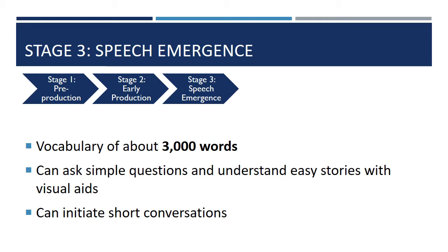Stage three is called speech emergence. Students in this stage have about 3,000 words in their active and receptive vocabulary. This is a stage in which students will begin speaking in more complete sentences. They'll be able to ask easy questions, understand simple stories still with visual aids, but they will be able to initiate short conversations with people in the community and with classmates. They'll also be able to do some work with specific subject matter.